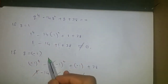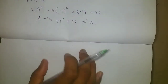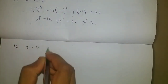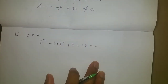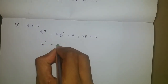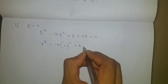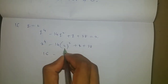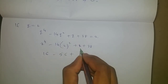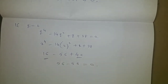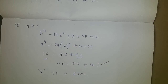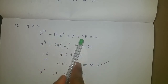Now I will try q = 2. Substituting: 2⁴ - 14(2²) + 2 + 38 = 16 - 56 + 2 + 38 = 0. So q = 2 is a zero of q⁴ - 14q² + q + 38 = 0.